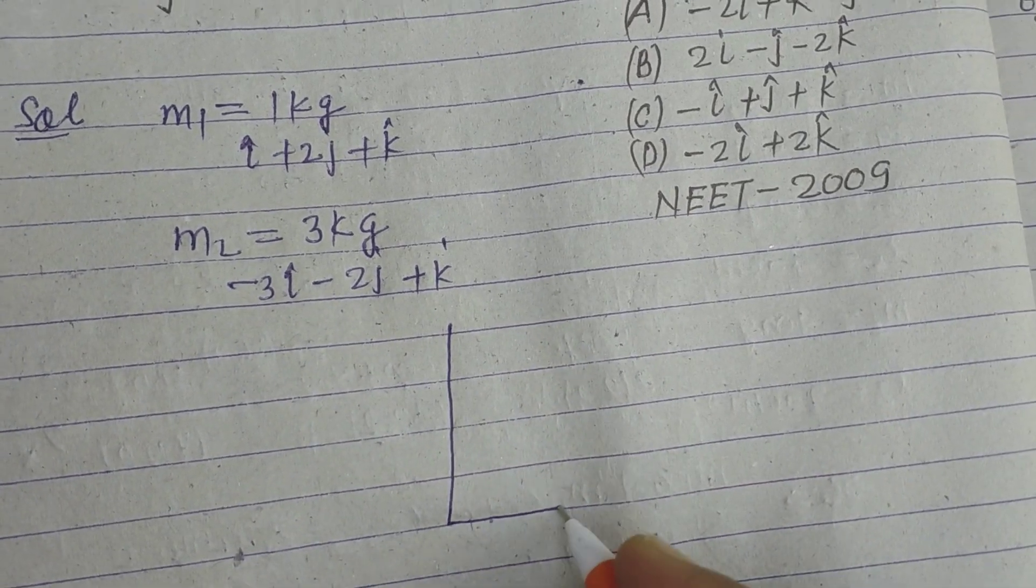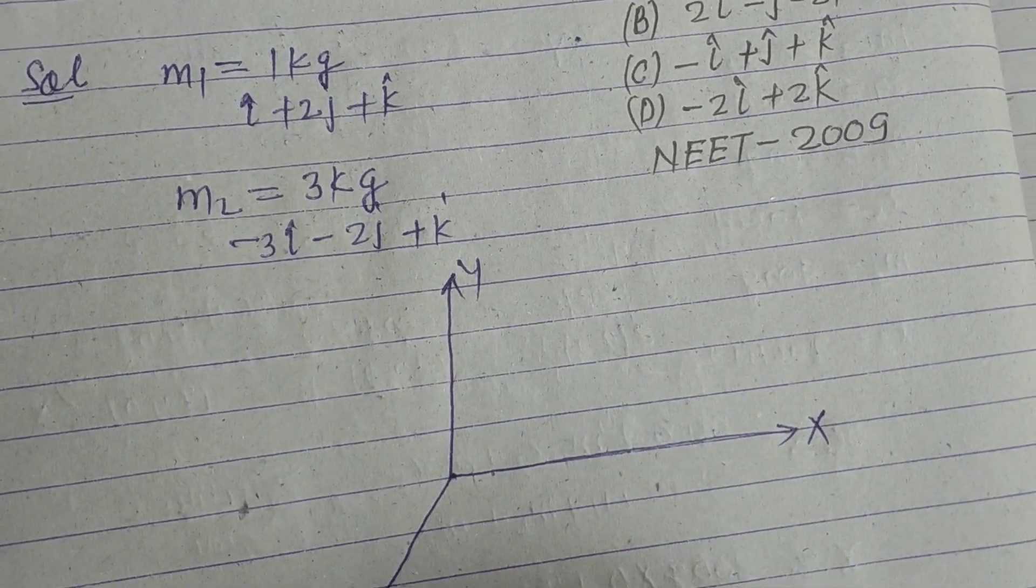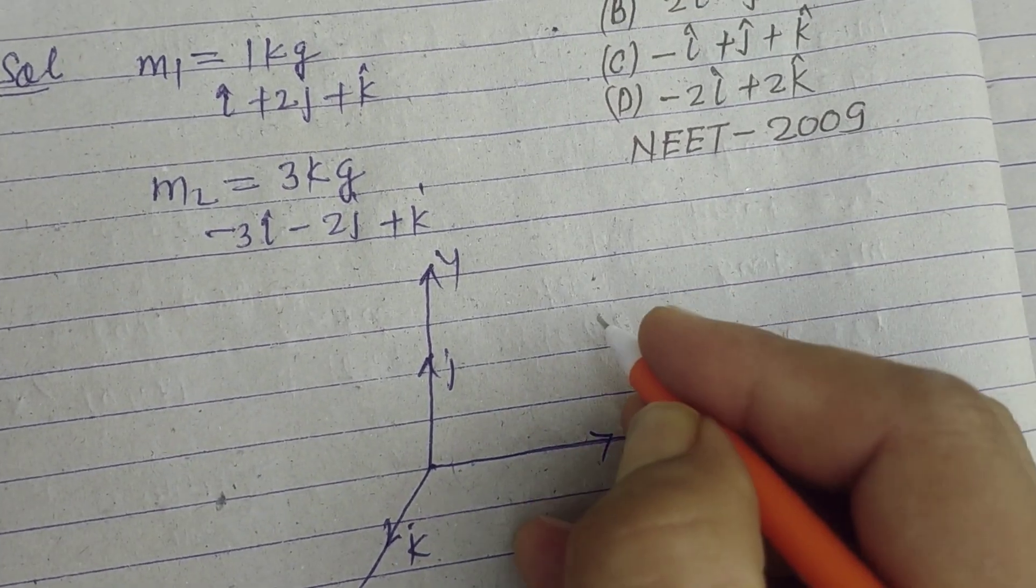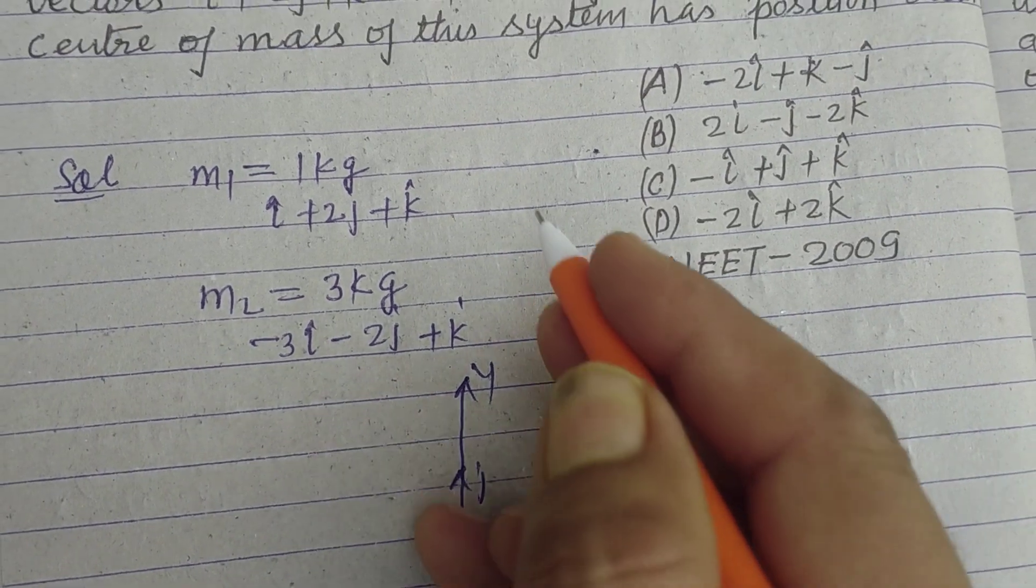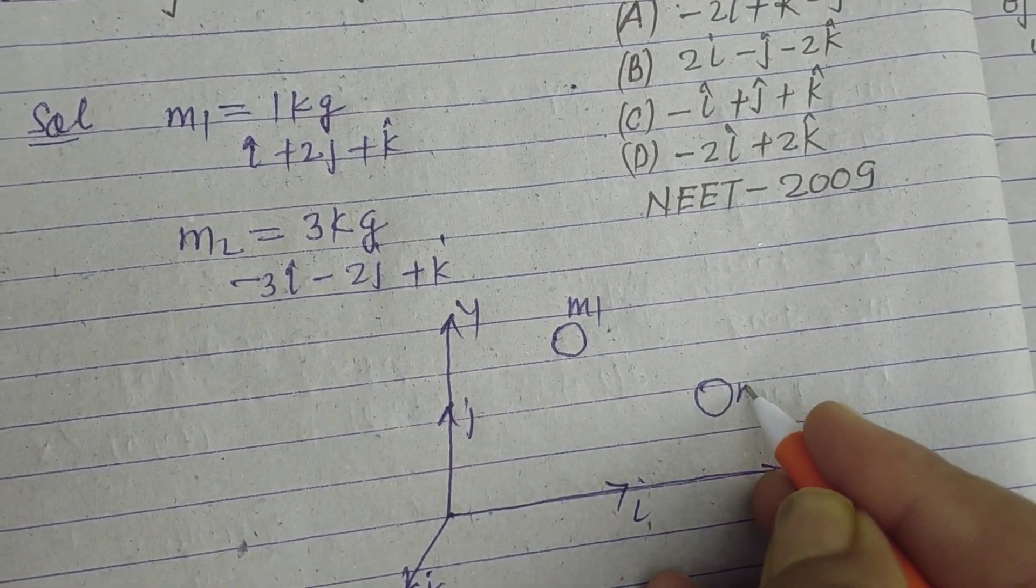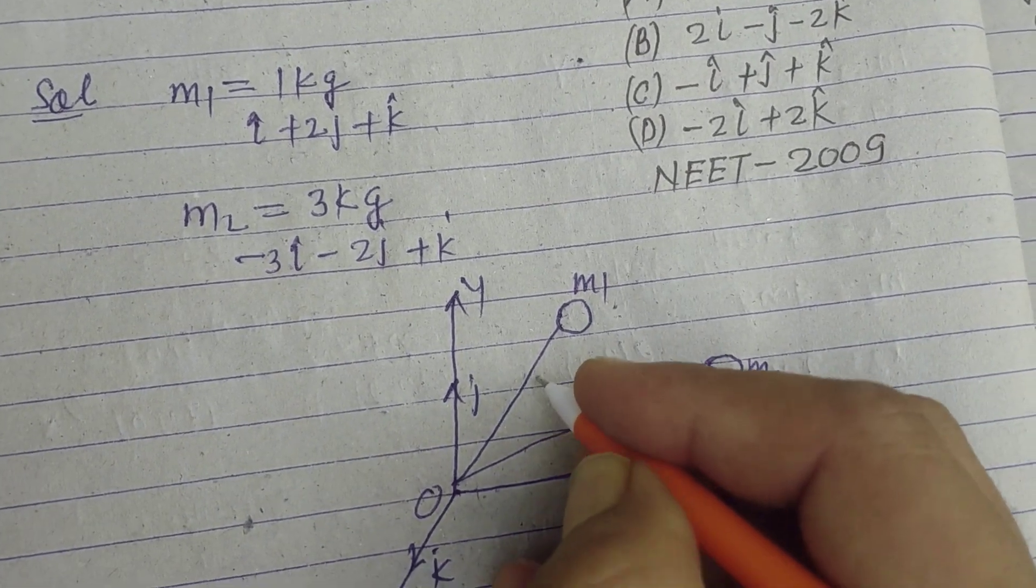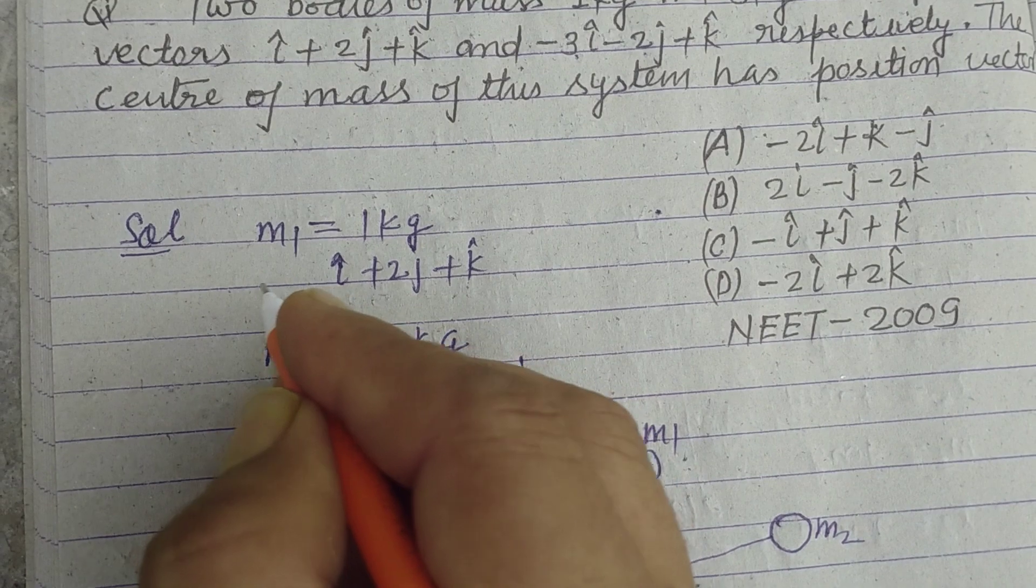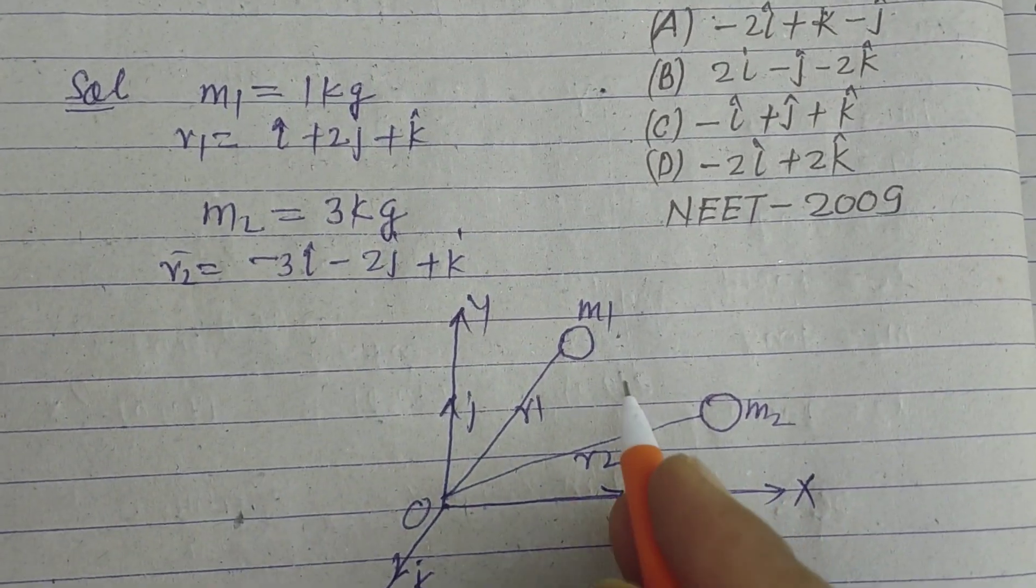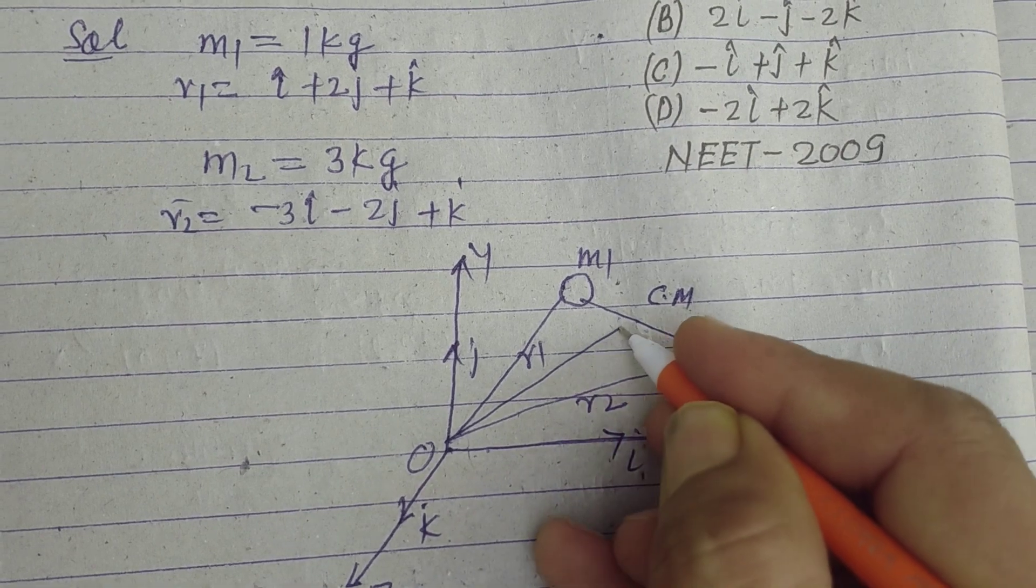Now let this be a Cartesian system x, y, z with i cap, j cap, k cap. Two particles are here - let this be m1 and this be m2. Position vectors from origin, let this be r1 and this be r2. Let center of mass be here, its position vector from the origin is r.